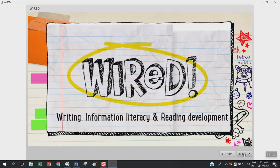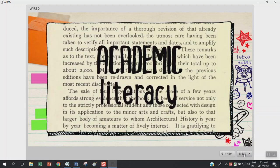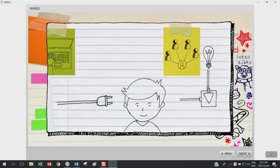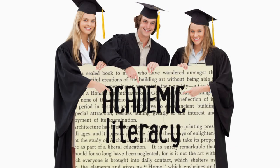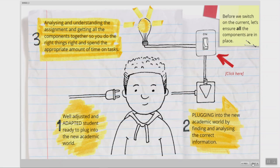WIRED stands for Writing, Information Literacy and Reading Development – the basic skills underlying academic literacy. Research has shown that when students exhibit the required academic literacy skills, they stand a better chance to complete their modules and achieve success at higher education institutions.